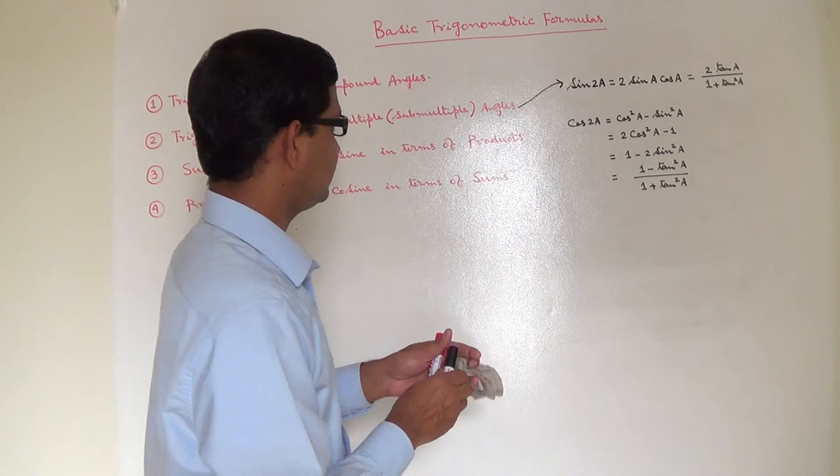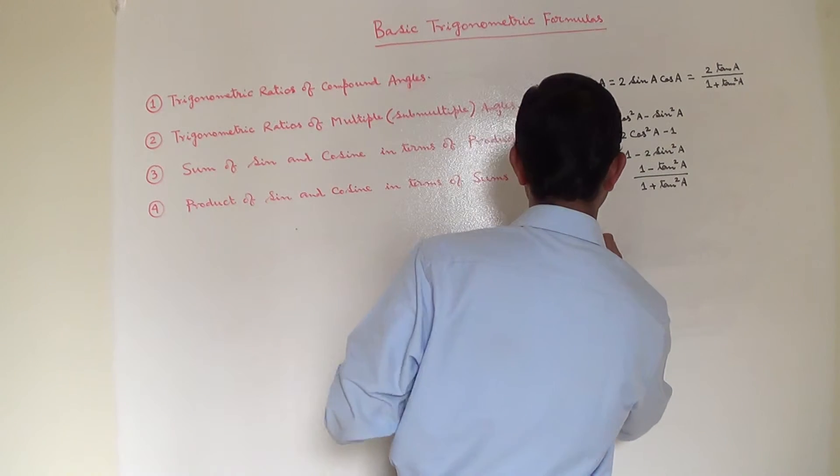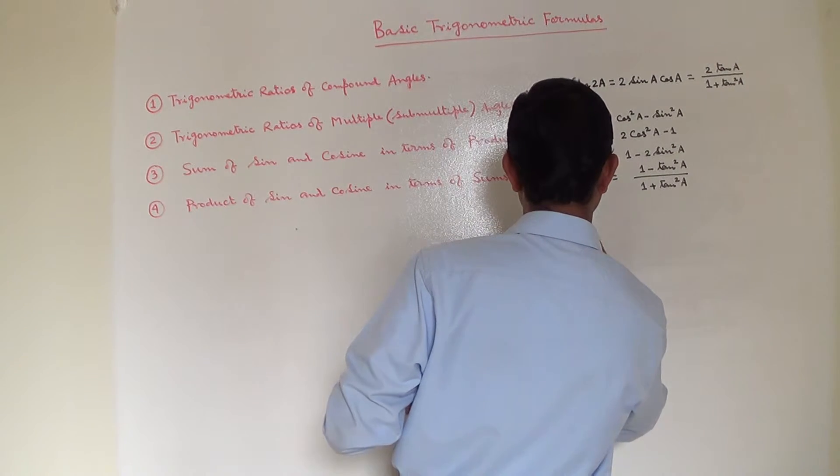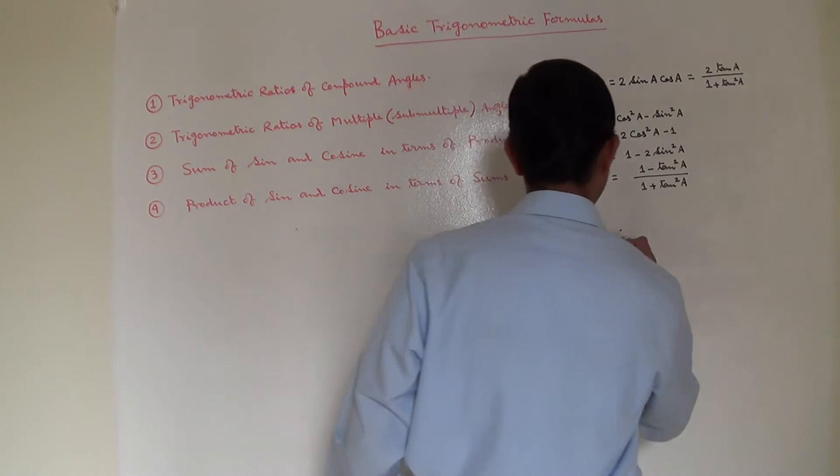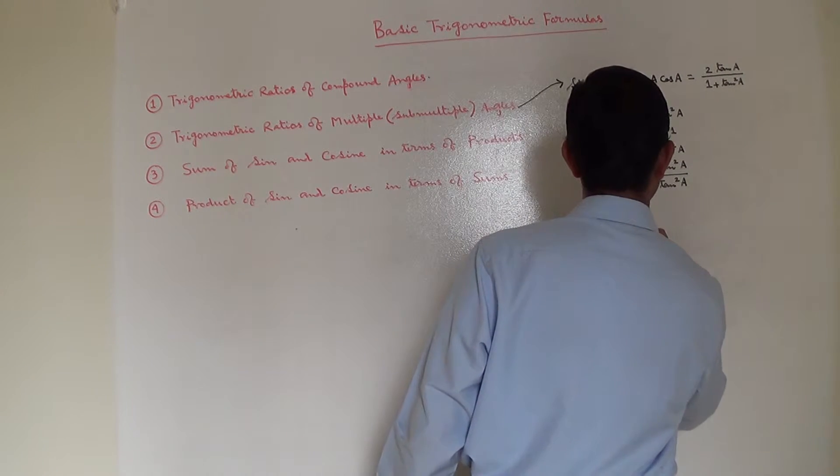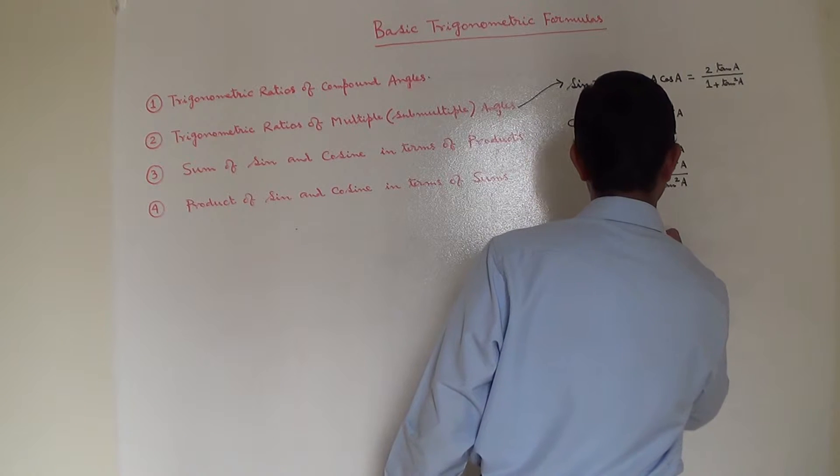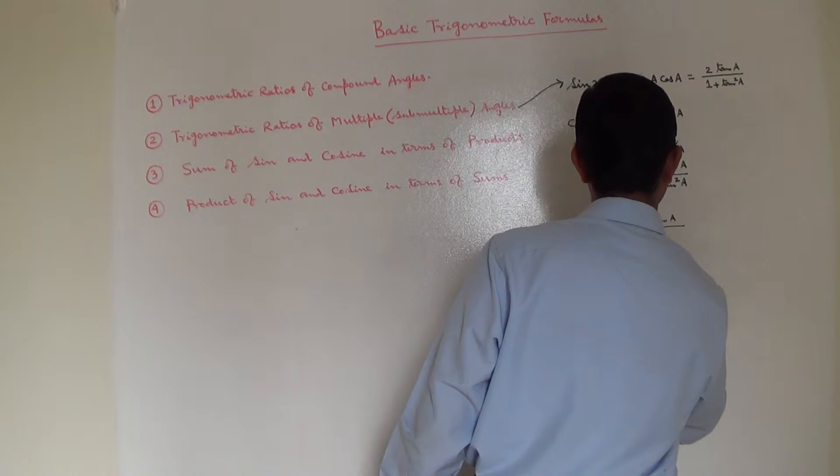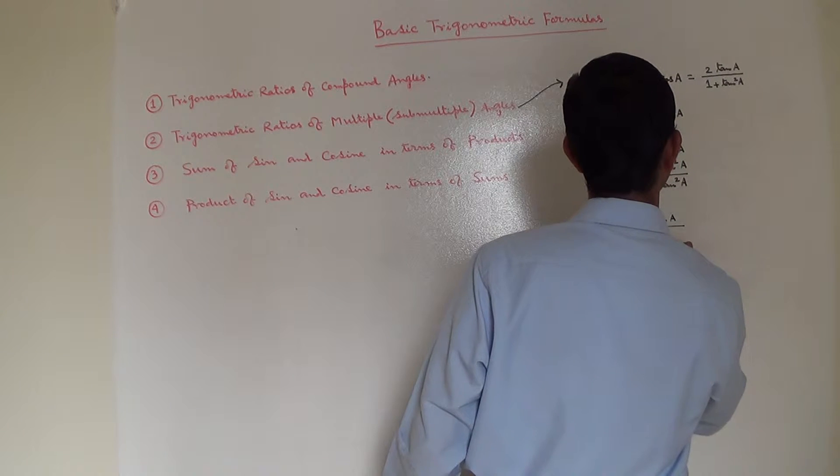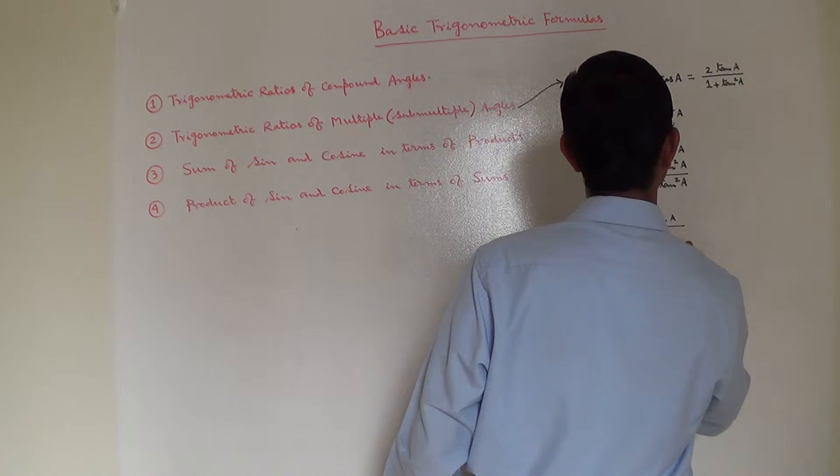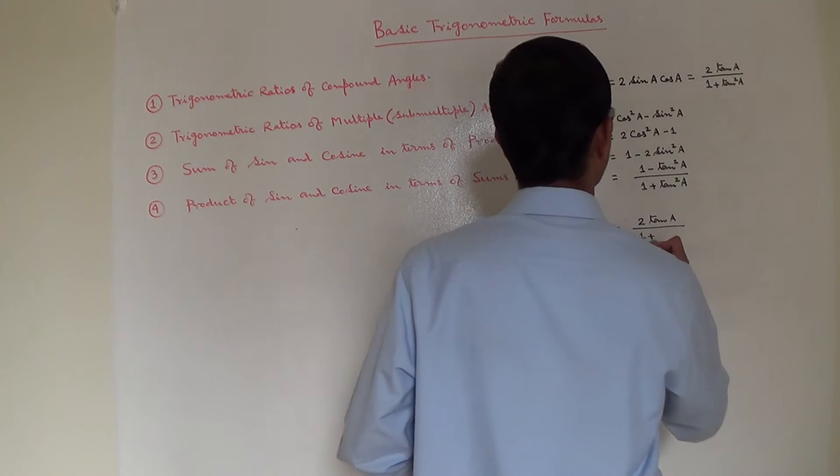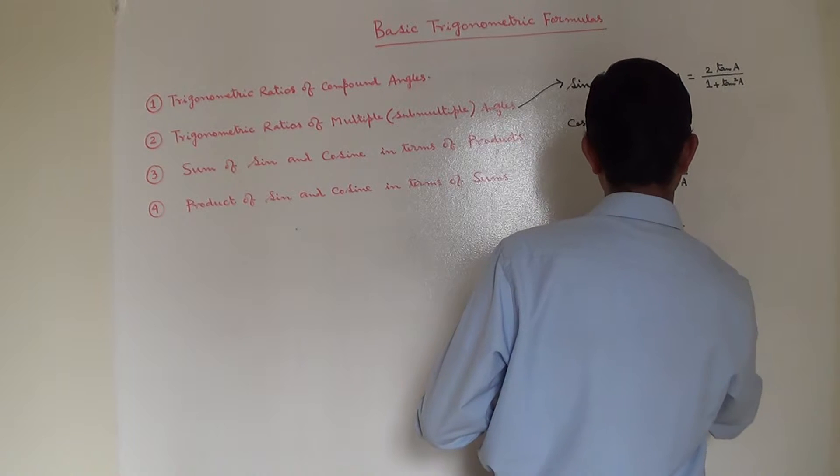Next set of formulas is for tan 2A. Tan 2A is equal to 2 tan A divided by 1 minus tan square A.